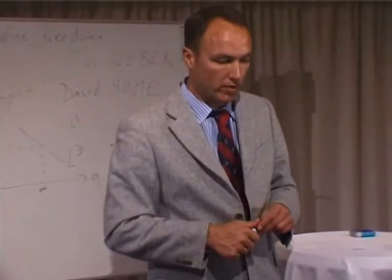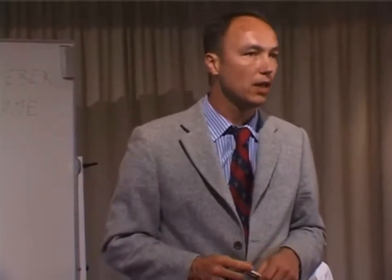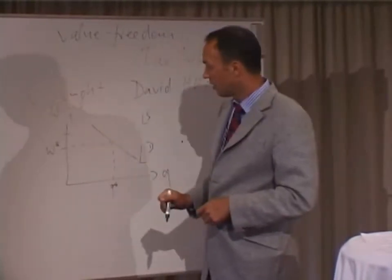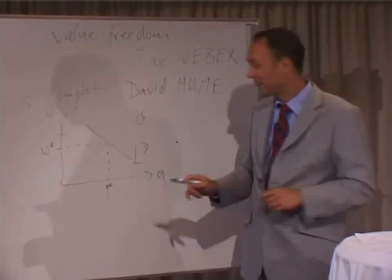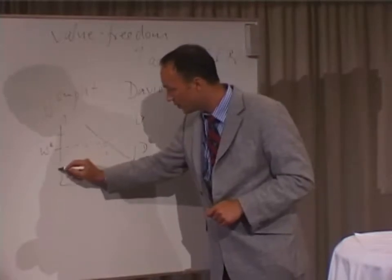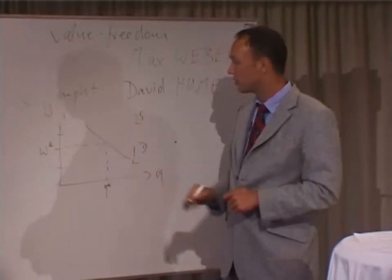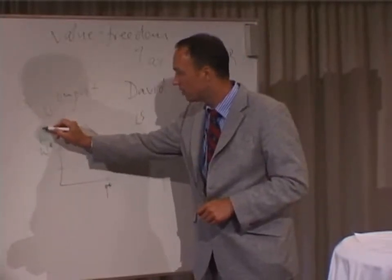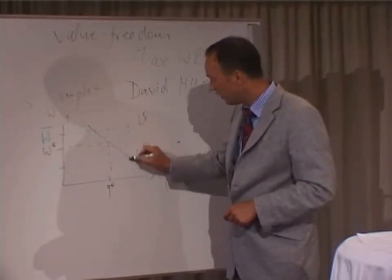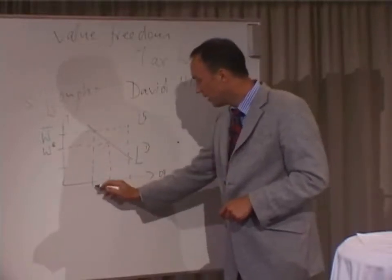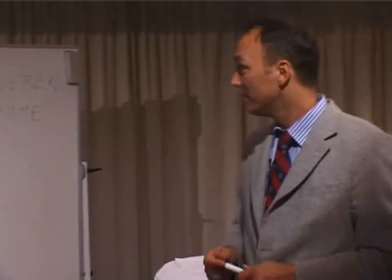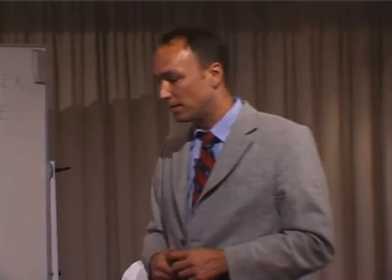Now we can analyze the impact of a minimum wage law. If the minimum wage is fixed below the market wage rate, there will be no impact. A problem arises if we set the minimum wage above the market rate, because at this rate we have a certain demand for labor but a higher supply. This difference between supply and demand is called unemployment. So we have a higher supply of labor than demand for labor — and this is exactly what unemployment is all about.